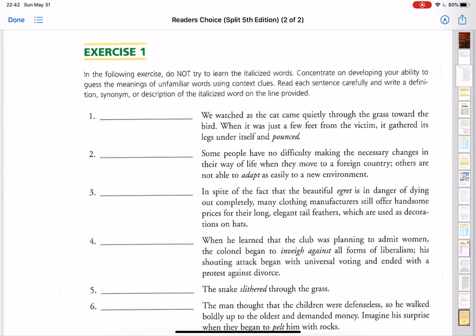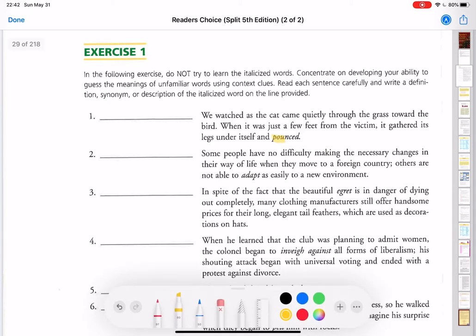Let's try the first one together. We watched as the cat came quietly through the grass toward the bird. When it was just a few feet from the victim, it gathered its legs under itself and pounced. So I want to guess what the meaning of the word pounced might be.